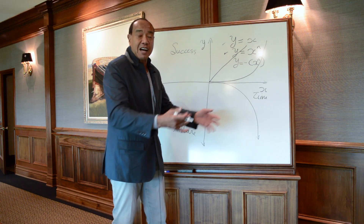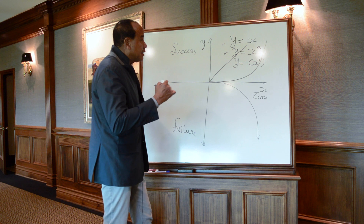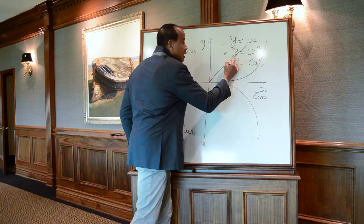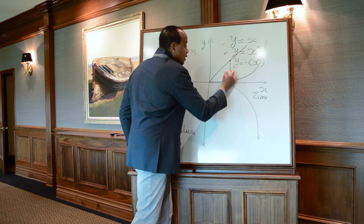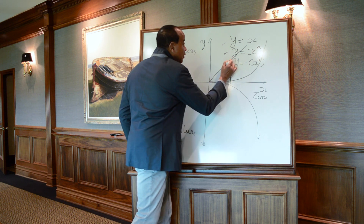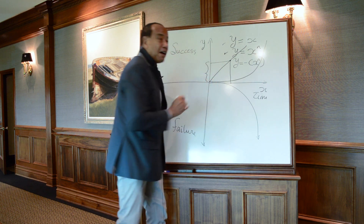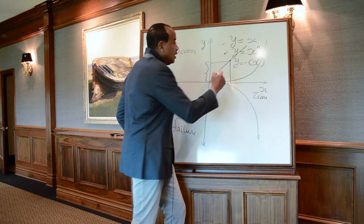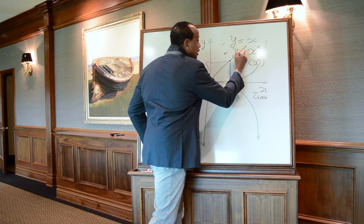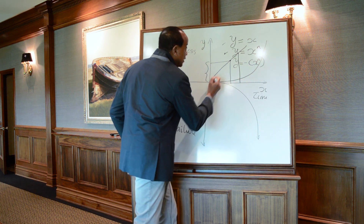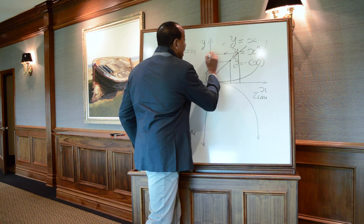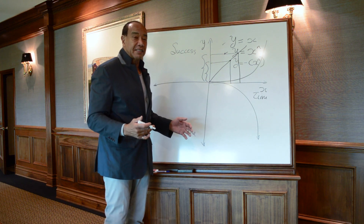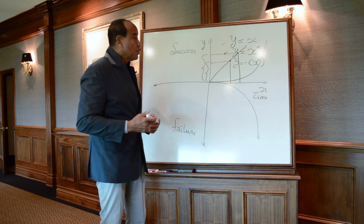If we look at any component part of the word success — say effort as an example — the expectation is that as you put out effort you go up this line graph. You get to this point, over this amount of time, you'd expect that much success. You put out more effort, you continue going up the line graph, you get to this point, over this amount of time, you'd expect a linearly increased amount of success.